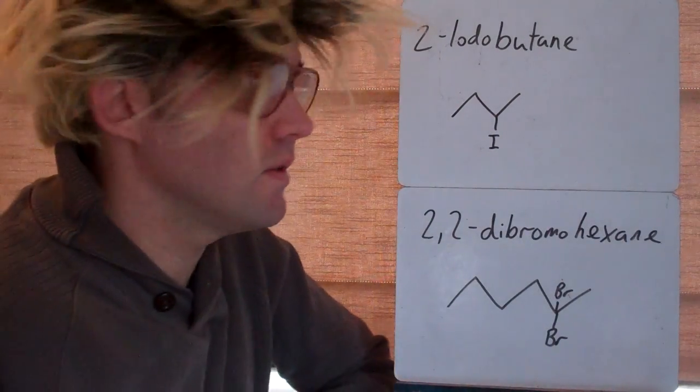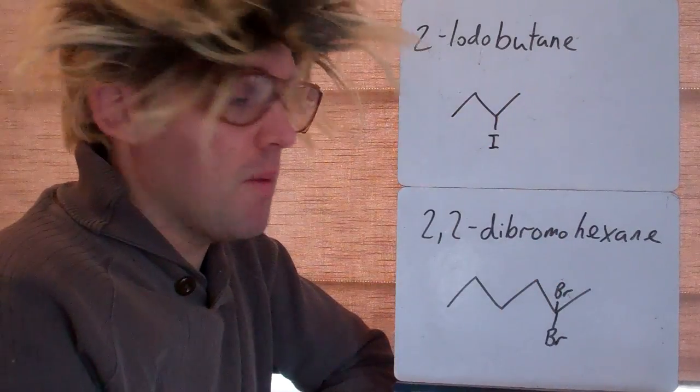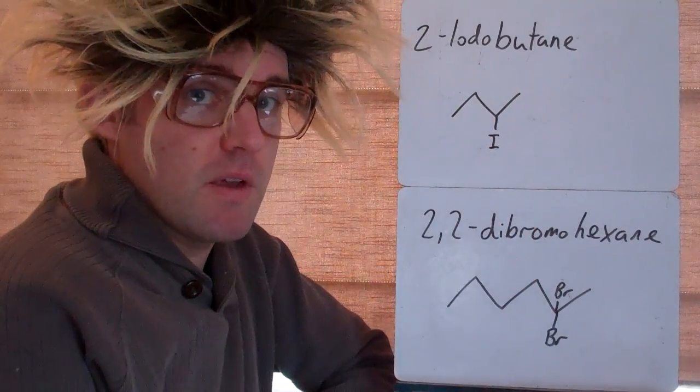I've got two more examples to give you a bit of practice in naming. So this is 2-iodobutane. So we've got 1, 2, 3, 4 carbons and iodine coming off the second one.